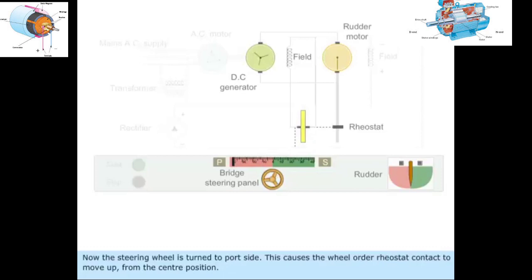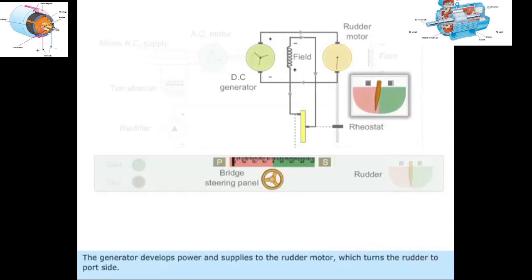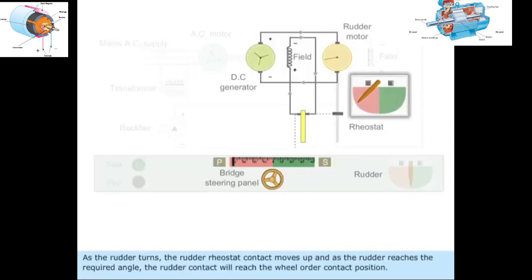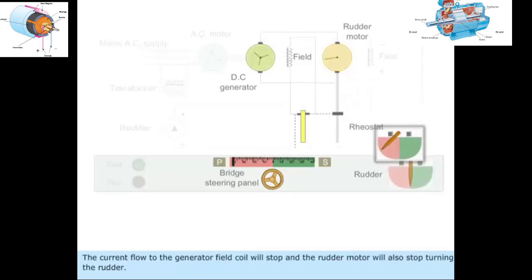This causes the wheel order rheostat contact to move up from the center position. Due to the difference in voltages between the two contacts, the current will flow through the generator field coil. The generator develops power and supplies to the rudder motor, which turns the rudder to port side. As the rudder turns, the rudder rheostat contact moves up, and as the rudder reaches the required angle, the rudder contact will reach the wheel order contact position. The current flow to the generator field coil will stop and the rudder motor will also stop turning the rudder.